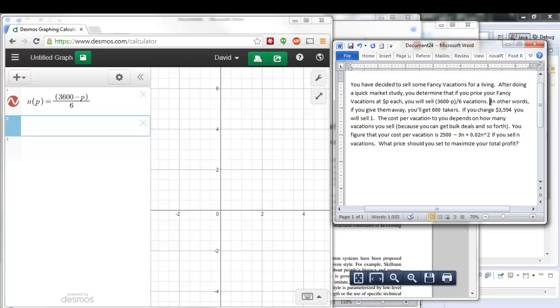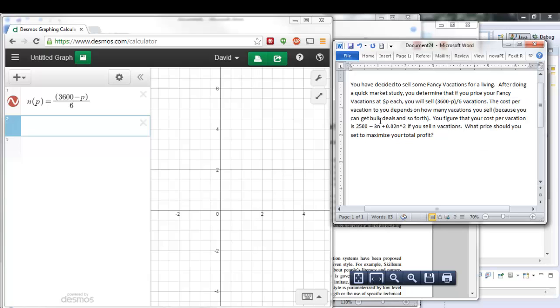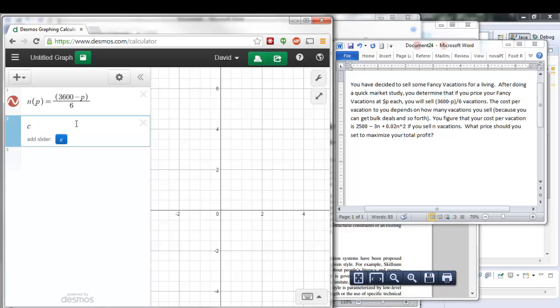The cost per vacation to you depends on how many vacations I sell. So I've got this cost per vacation equation. So this is cost, but it's a function of n, my number of vacations. I'm going to make it actually a function of x. So it's 2,500 minus 3x plus 0.02x squared. So now I've got a cost function. This is cost per vacation. This is number of vacations as a function of price.